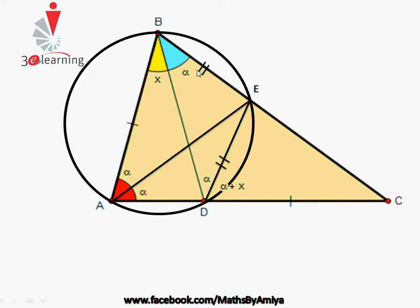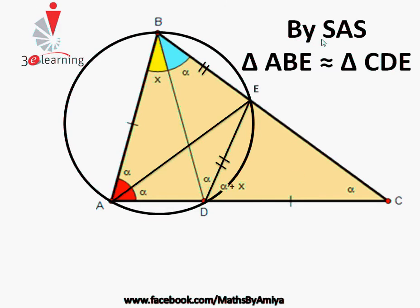Now consider the similarity. Check triangle ABE: the angle is x + α. In triangle DEC, the angle is also α + x, and these two sides are equal. By SAS (Side-Angle-Side), the two sides are equal and the angle between them is equal, so triangle ABE is similar to triangle DEC. By this similarity, the equal lines making angle α + x means the same line makes angle α at C.